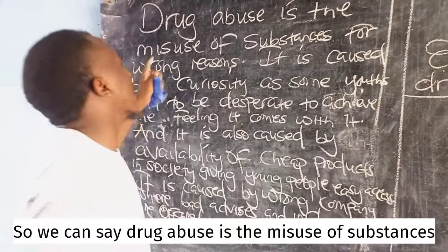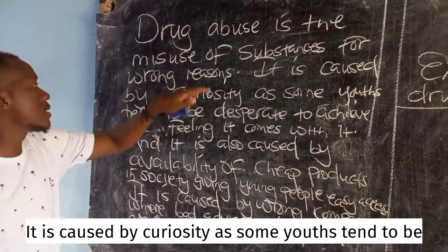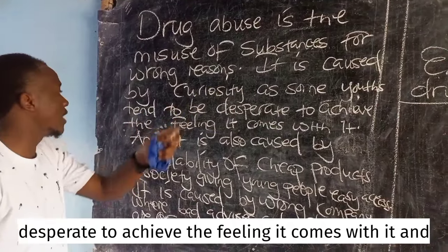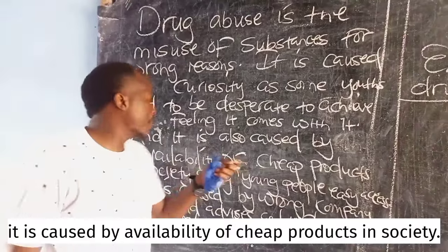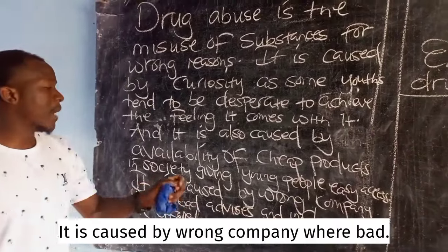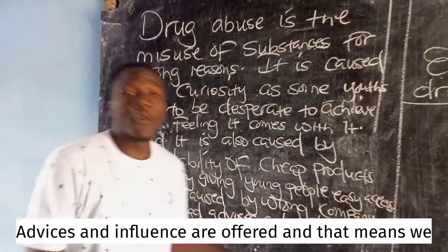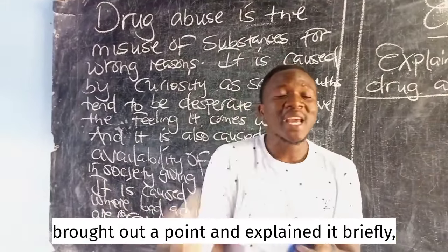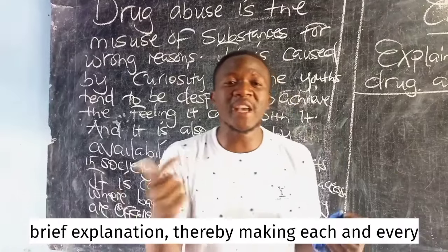So to summarize: drug abuse is the misuse of substances for wrong reasons. It is caused by curiosity, as some youths tend to be desperate to achieve the feeling it comes with. It is caused by the availability of cheap products in society, giving young people easy access. And it is caused by wrong company, where bad advice and influence are offered. We brought out each point and explained it briefly, thereby gaining a mark for the point and supporting it with a brief explanation, making each point meaningful.